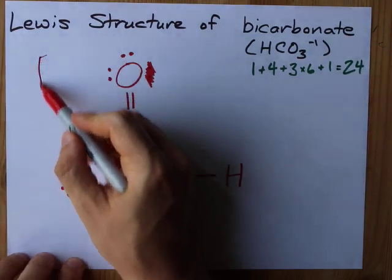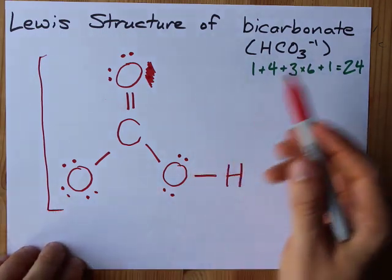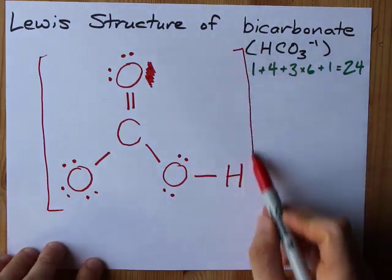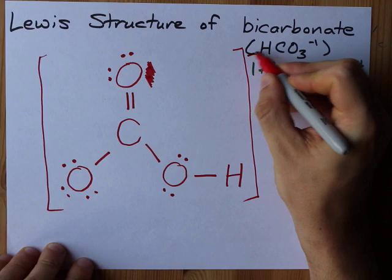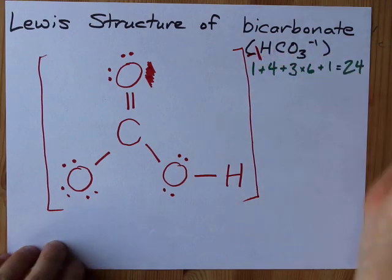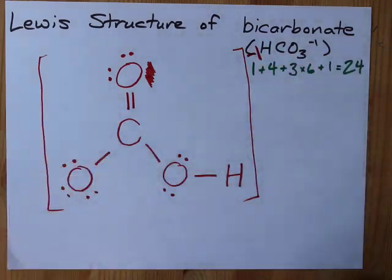To complete this Lewis structure, because it has a minus charge on it, you need to put it in square brackets, and you need to write a little minus one in the corner here. That's just how you do it for ions.